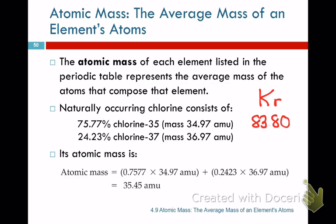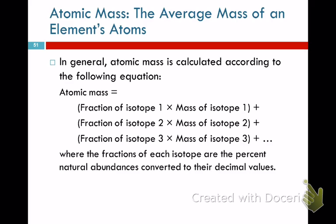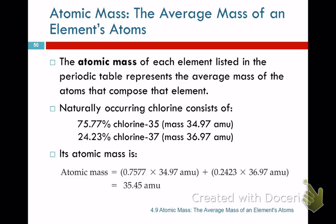What if there are three isotopes? Each one would have a mass and a percent. You multiply them, add them together, and divide by 100, or use the fraction method. When you do this calculation, you get 35.45 — and you can see that number right on the periodic table for chlorine. That's where that number comes from. It's the aha moment.